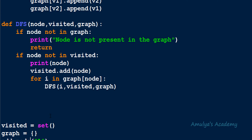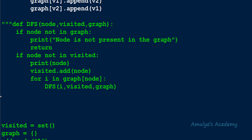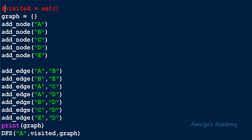Today we want to rewrite this DFS function using an iterative approach. So first I will comment out the recursive function, and I will also comment out all the statements related to it — that is, the visited set and the function call.